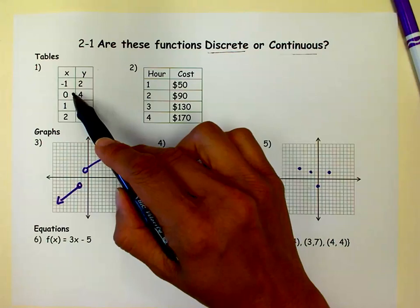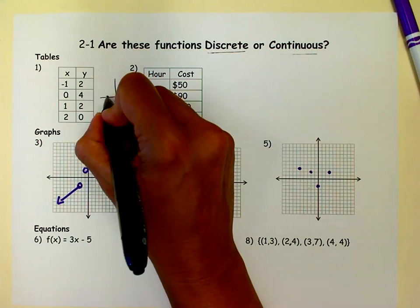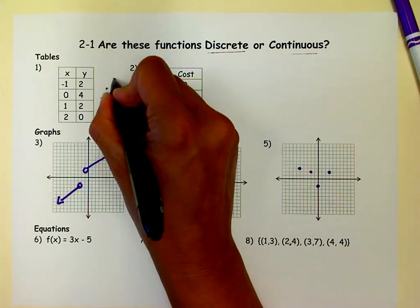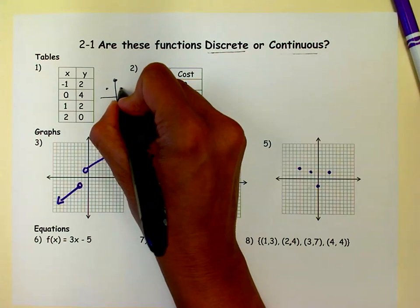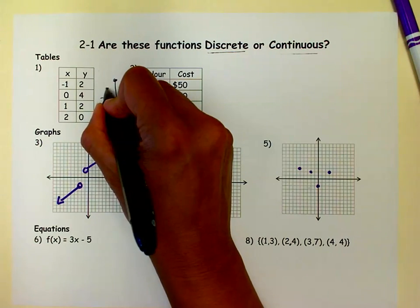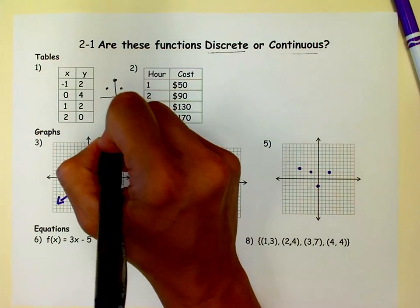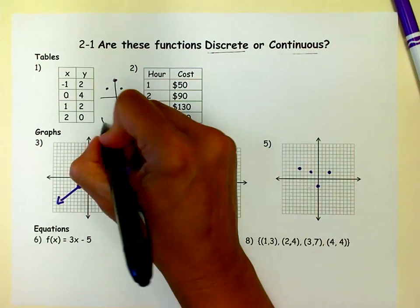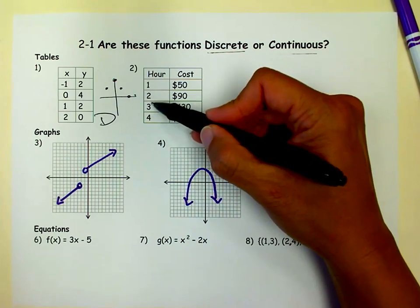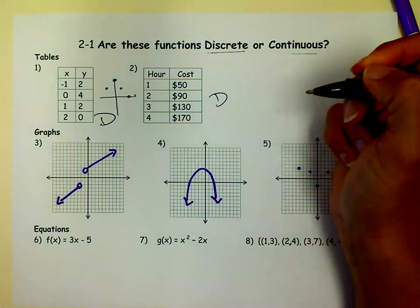So this is discrete, and if you were to graph that, you'd have negative 1, 2, 0, 4, 1, 2, 2, 0. To get from this point to that point, I have to lift up my pen. It doesn't go in a line. So this is discrete. So on any table, see how I'm jumping from one to the next, is going to be discrete.